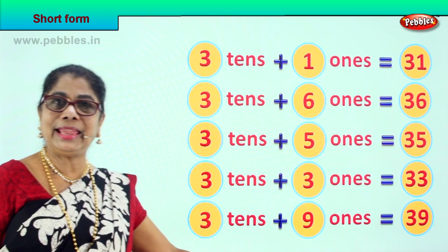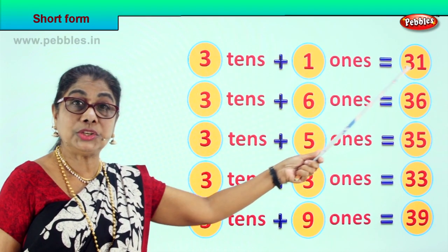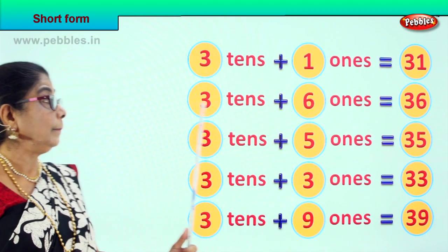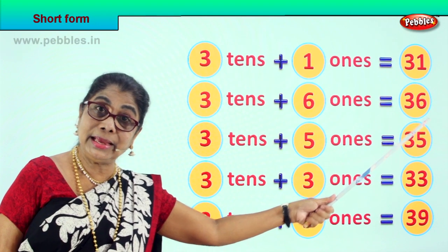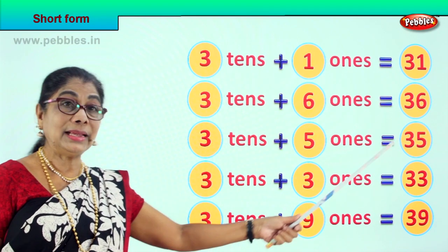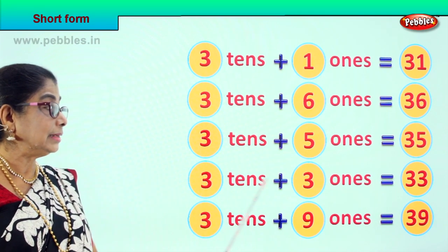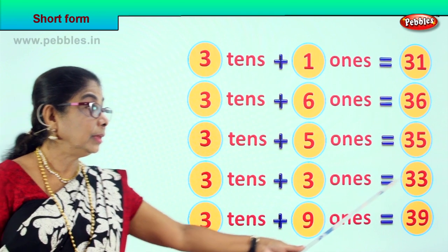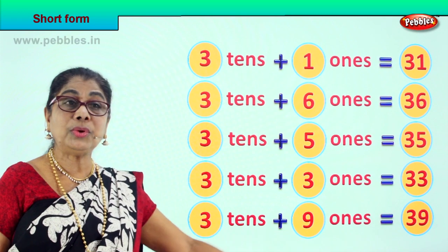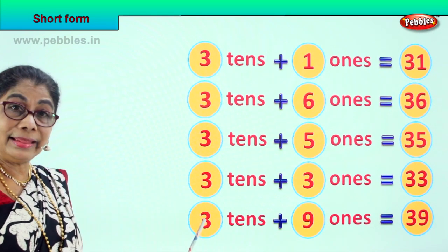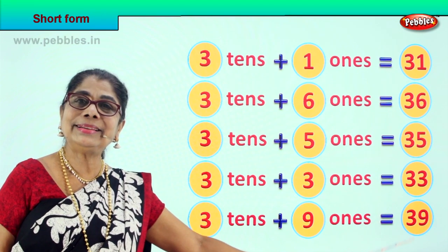Are you enjoying the short form? Let's look at it again. Three tens plus one one is equal to 31. Three tens plus six ones is equal to 36. Three tens plus five ones is equal to 35. Three tens plus three ones is equal to 33. And three tens plus nine ones is equal to 39. Did you enjoy the short form?